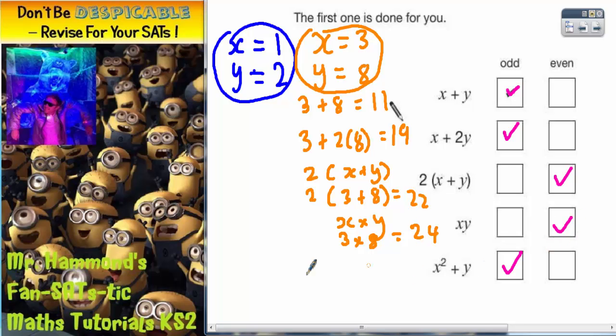And the final statement, we've got x squared plus y. So this is 3 squared plus 8. Well, 3 squared is 9. And 9 plus 8 is 17, which is still odd.